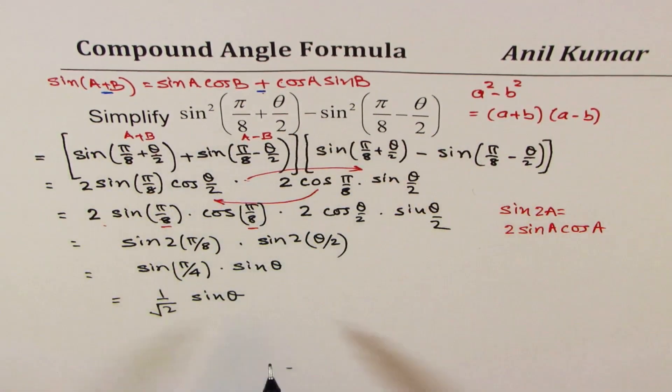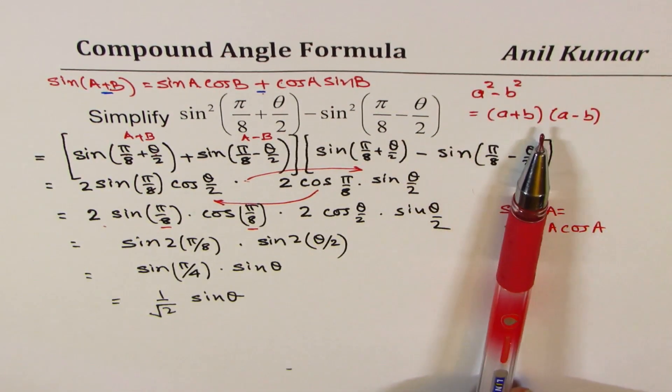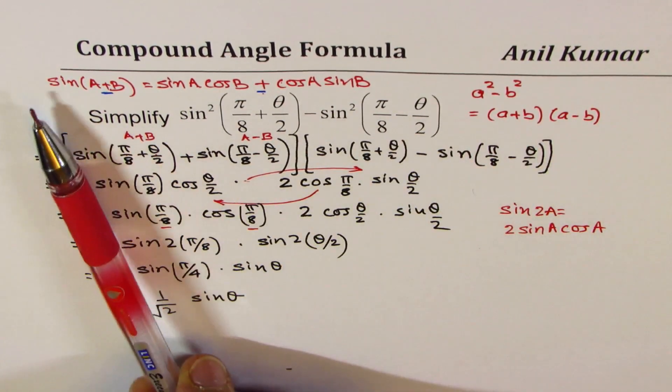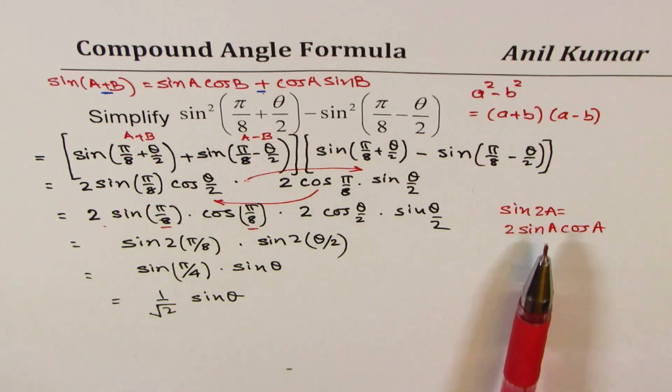So therefore, this whole term can be simplified as 1 over √2 sin(θ). So I hope you understand and appreciate how we use difference of squares to factor and then we use sum and difference formula in different ways and also double angle formula to simplify. Feel free to write your comments, share my videos, and if you like, that'd be great. Thank you and all the best.